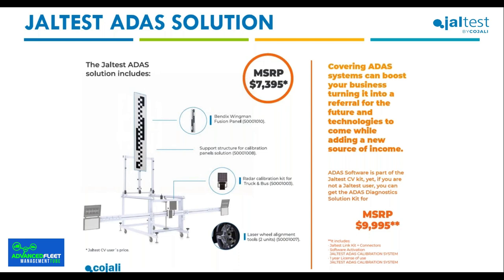When it comes to pricing, for those already using JALTES on the commercial vehicles version, the MSRP will be $7,395. For those not yet using the JALTES commercial vehicle software, there is another option that includes all four references plus the JALTES link kit with connectors — 9-pin connector, 6-to-9-pin adapter, OBD2, etc. — plus the software activation for the JALTES ADAS calibration system and one year of license for use of the software.